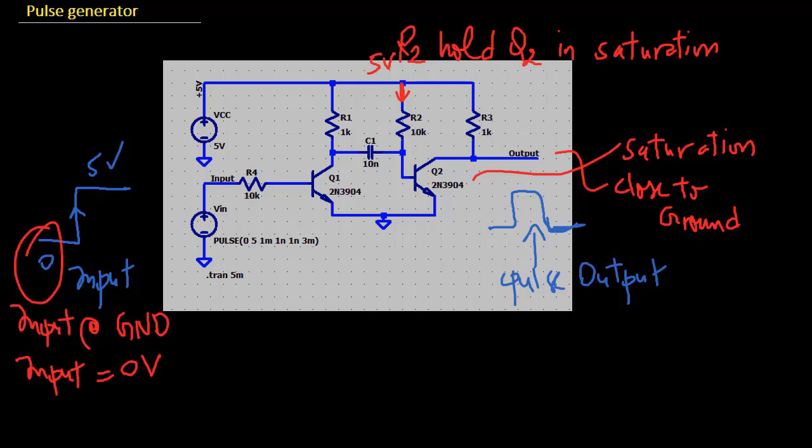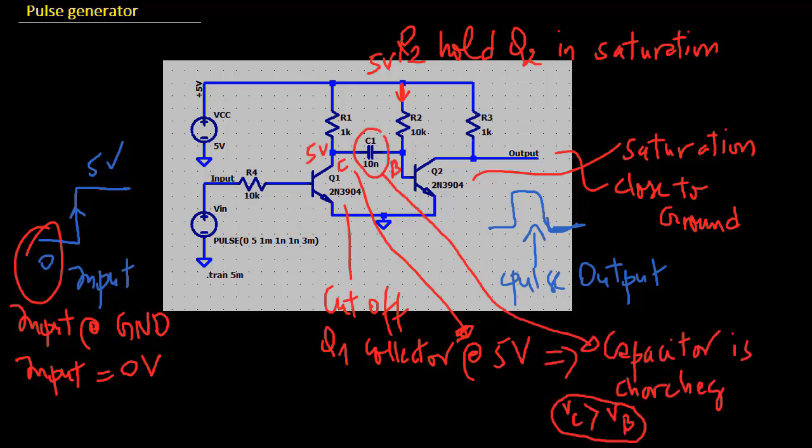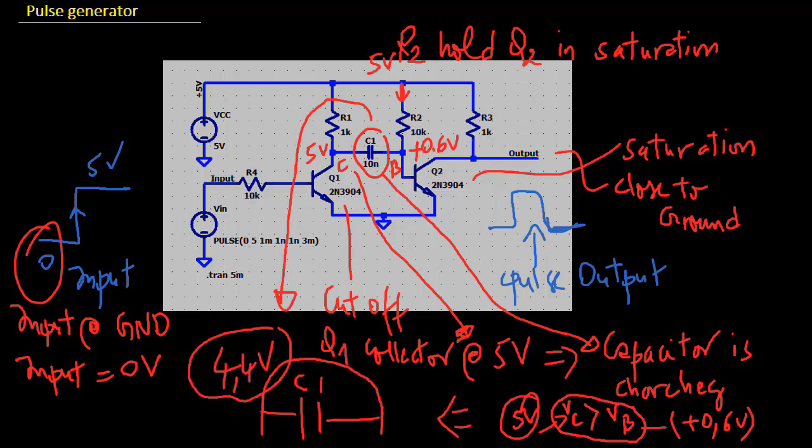With the circuit's input at ground Q1 is cut off with its collector at plus 5 volt. The capacitor C1 is therefore charged with plus 5 volt on its left terminal and approximately plus 0.6 volt on its right terminal so it has about 4.4 volts across it.